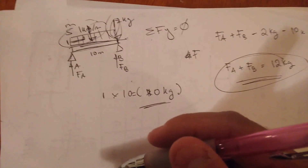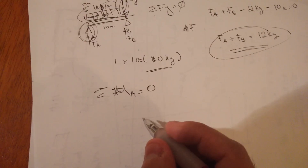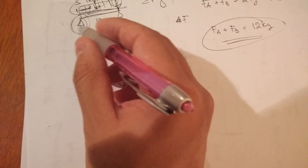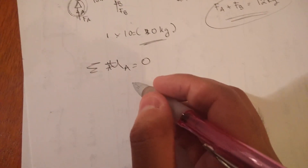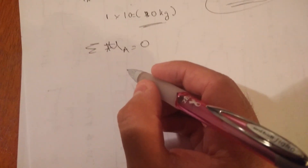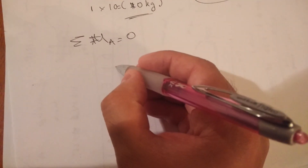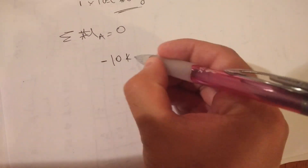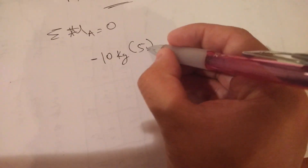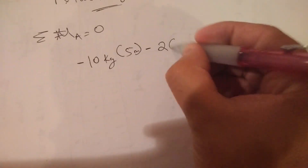Since FA and FB are not equal — the 2-kilogram load is off-center — we calculate moments around point A. Summation of moments around A equals zero. At point A there is no force acting, so we neglect it. We start with the 10-kilogram concentrated load: 10 kilograms times its distance of 5 meters.